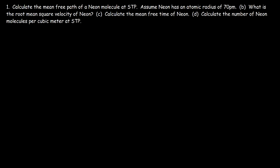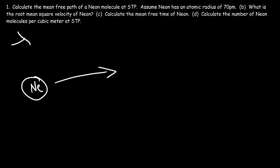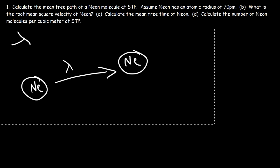In this video, we're going to talk about how to calculate the mean free path of a gas molecule. The mean free path, represented by the symbol lambda, is the average distance that a gas molecule travels between collisions. We're dealing with neon in our example — how far will neon travel before it collides with another neon gas molecule? That's the mean free path, and that's what we need to calculate in this problem.